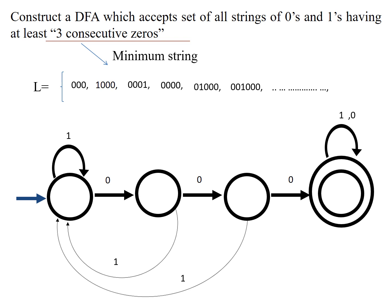To ensure all possible strings are accepted, every state must have a transition on every input. The initial state has transitions on both one and zero; the second state has zero and one; the third state has zero and one; and the fourth state also has zero and one. Since every state has a transition on every input, it is a complete DFA accepting any string of zeros and ones having at least three consecutive zeros.